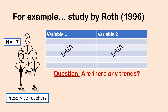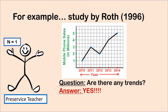Here is an example — a somewhat older but important study — to illustrate where pre-service teachers stand in their ability to recognize when a graph is appropriate and needed. In Roth's 1996 study, 17 pre-service teachers were asked to determine if there was a trend between two presented variables with data. They were given a table with one variable and data alongside another variable and data, and asked: do you see any trends within the data set? To the researchers' surprise, only one out of the 17 pre-service teachers used a graph to determine if there were any trends.